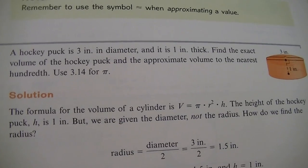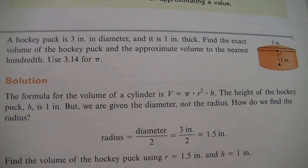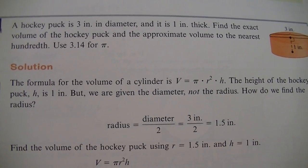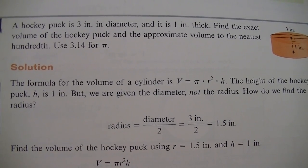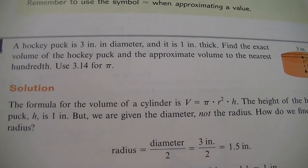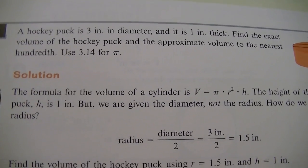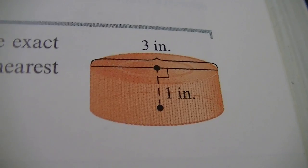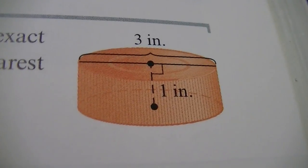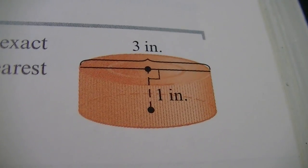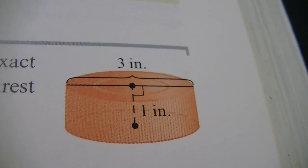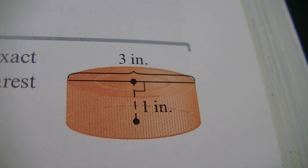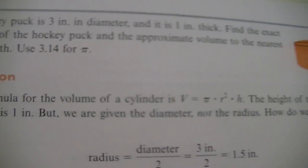Okay, over here, they give us a word problem. People love to hate word problems. So let's look at it. A hockey puck is three inches in diameter and is one inch thick. Find the exact volume of the hockey puck and the approximate volume to the nearest hundredth. This time we're going to use 3.14 for pi. So let's take a look at the picture that they give us. So here's our hockey puck. Three inches, they're saying, is all the way across. That's the diameter. So what would our radius be on that if we cut it in half? Half of three is 1.5. And then it's saying, from top to bottom, it's an inch thick there.